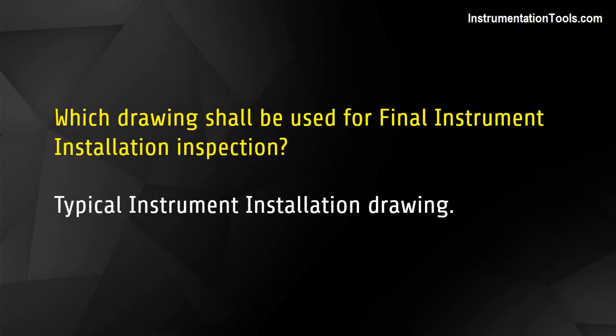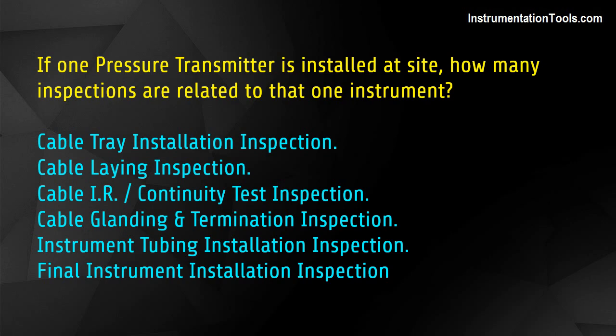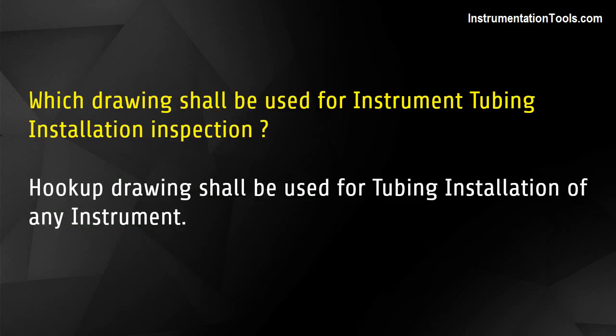Which drawing shall be used for final instrument installation inspection? Typical instrument installation drawing. If one pressure transmitter is installed at site, how many inspections are related to that one instrument? Cable tray installation inspection, cable laying inspection, cable IR continuity test inspection, cable glanding and termination inspection, instrument tubing installation inspection, and final instrument installation inspection. For instrument tubing installation inspection, the hookup drawing shall be used.